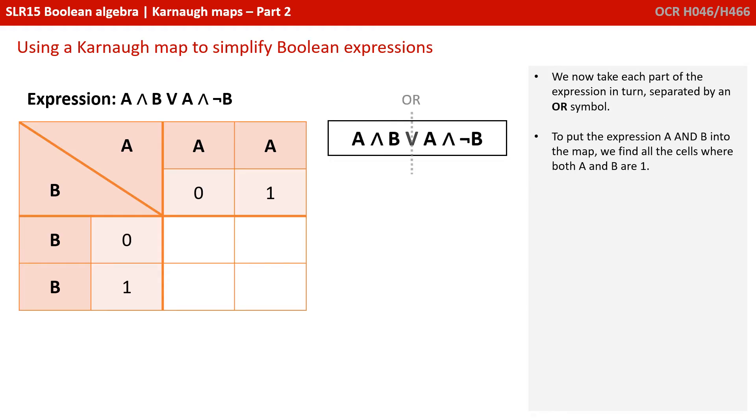We now take each part of the expression in turn, separated by an OR symbol. So to put the expression A and B into the map, we find all the cells where both A and B are one. There's only one location where this is the case, and we put a one in this cell.